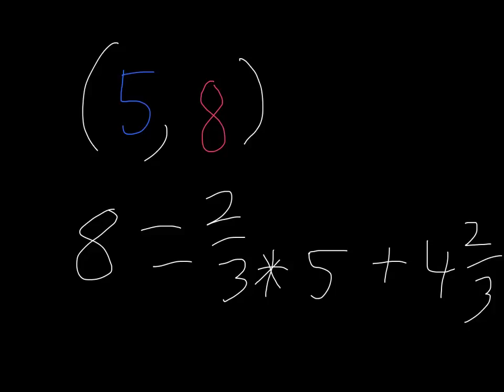So, first, we need to find 2 thirds times 5, which is 3.33 repeating. Now, is 3.33 plus 4 and 2 thirds equal to 8?